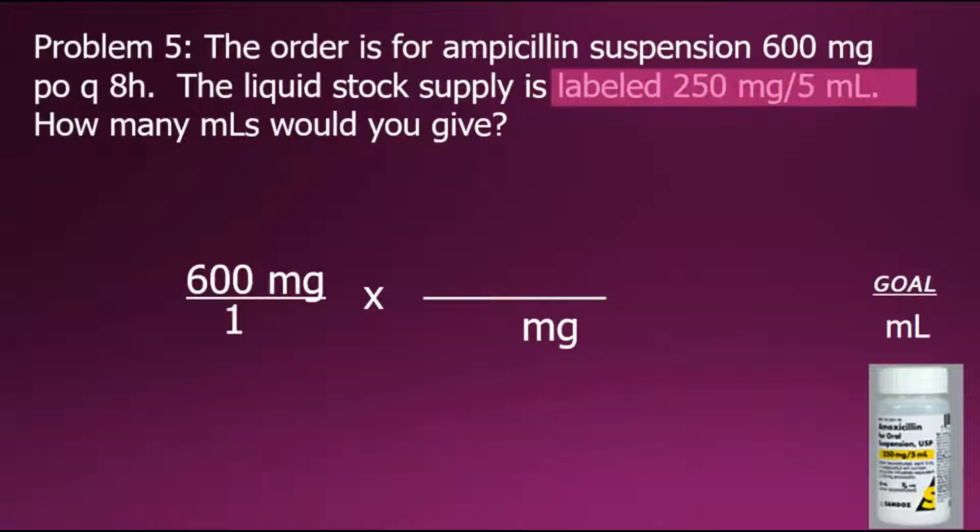The problem supplies the relationship between milligrams and milliliters. If we take equivalent values shown here, 250 milligrams equal to 5 milliliters, and express them in a fraction, the fraction has a special value of 1 that, when multiplying by 1, doesn't change the value but will allow us to convert from one unit to the other.